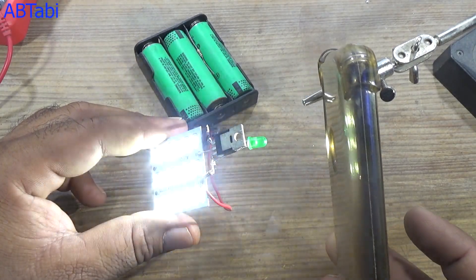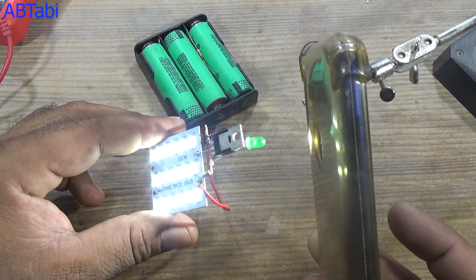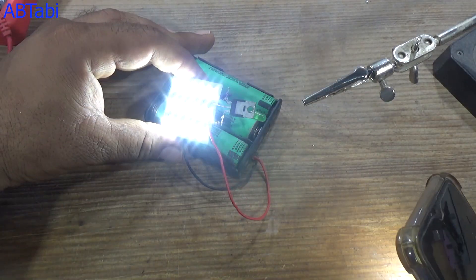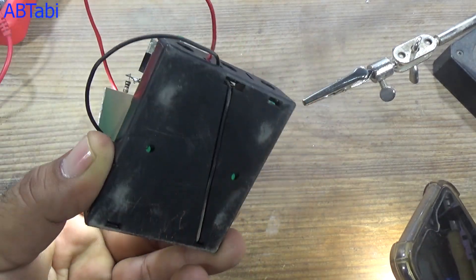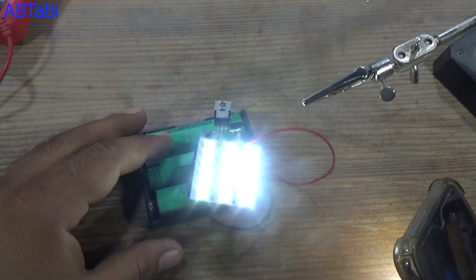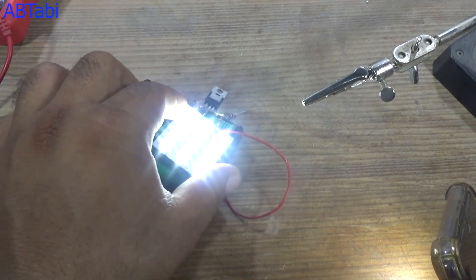When we throw the light at the surface of the LED light, the LED strip turns off. When light intensity is less, the light automatically turns on.